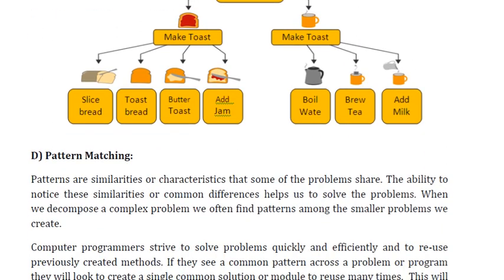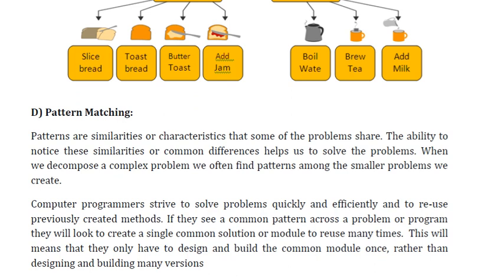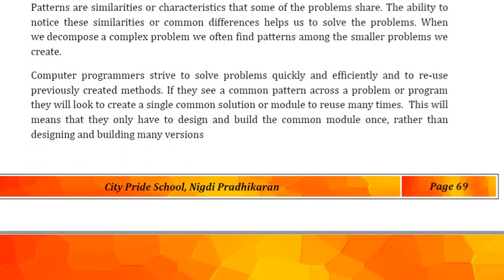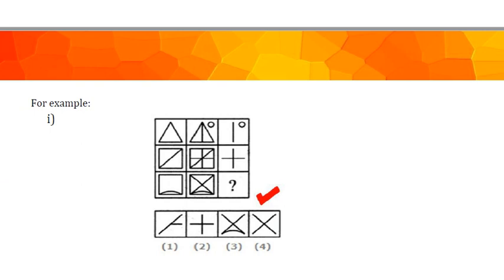Next is pattern matching. Pattern is the similarity that some of the problems share. The ability to notice these similarities helps us to solve the problem efficiently. When we decompose a complex problem, we often find patterns among the smaller problems we create. For example, in solving pattern questions like those you can see on your screen, we try to find similarities in each and every square. In short, pattern matching is the ability to notice the similarities.